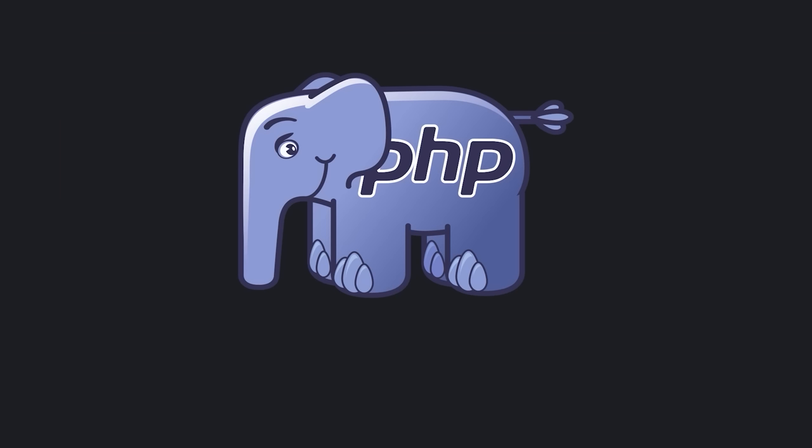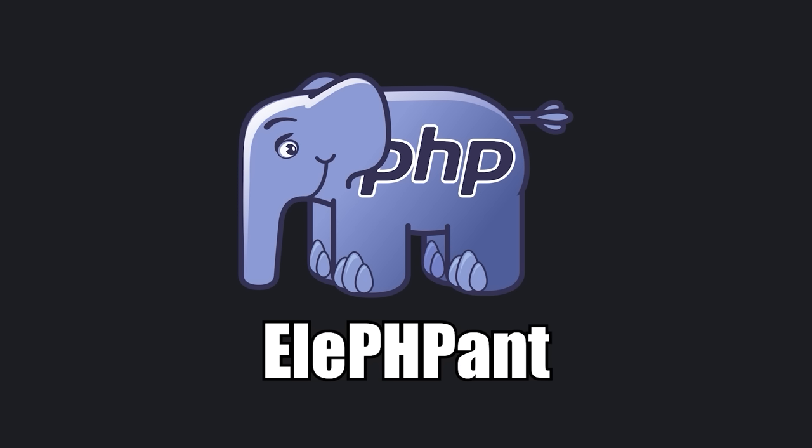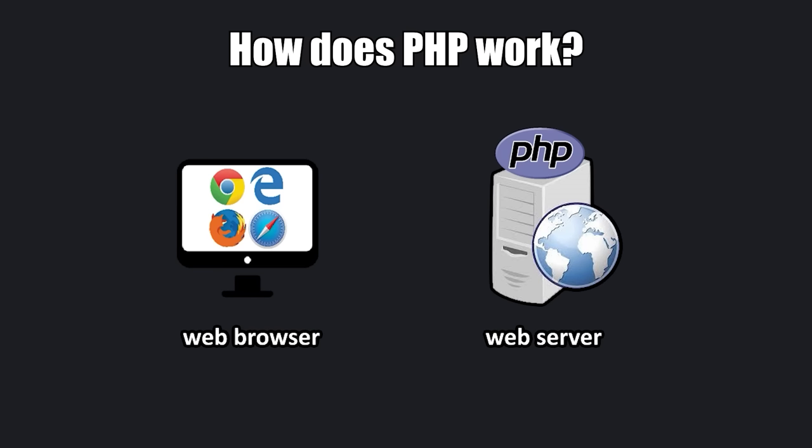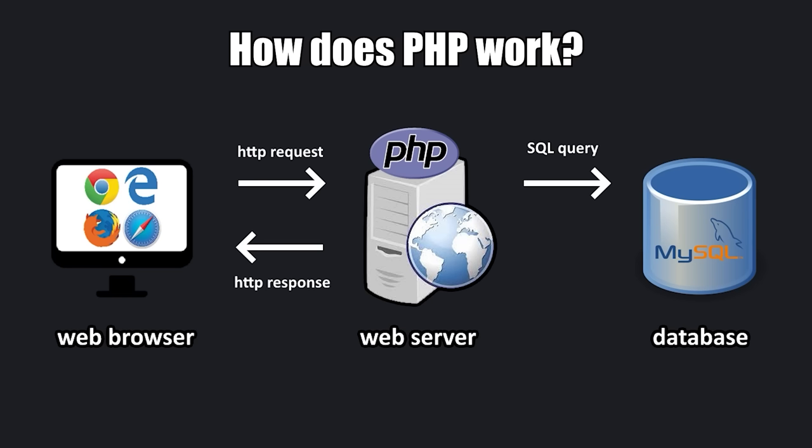Fun fact: the mascot of PHP is an elephant. How the basics of PHP work: a browser sends a request to a server, PHP on that server processes that request, then the server sends HTML back to the browser. Our server running PHP can even communicate with a database, then back to the web browser.